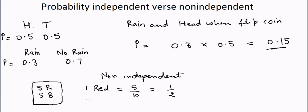But the probability of getting the second red ball will depend on whether you had a red ball on the first event or not. That is what we call non-independent probabilities.